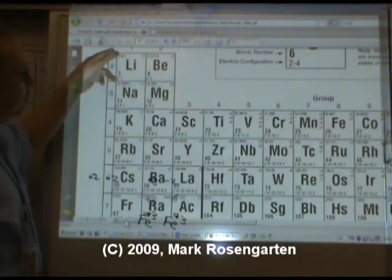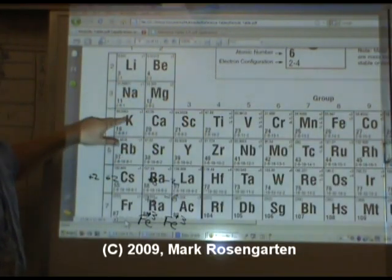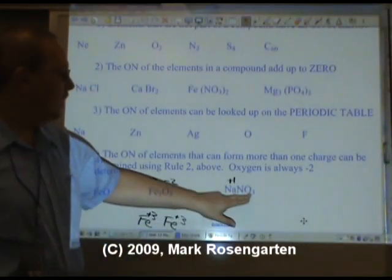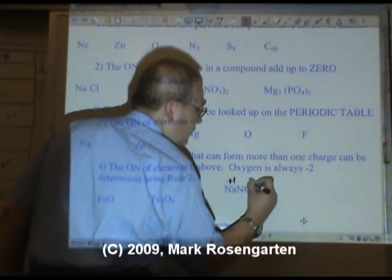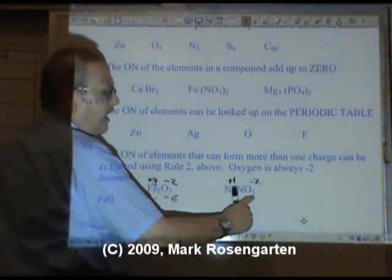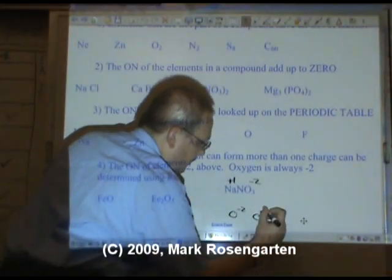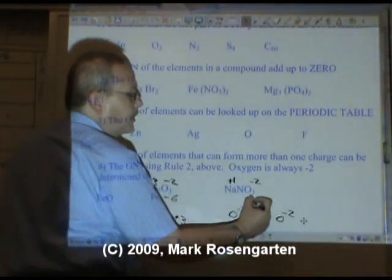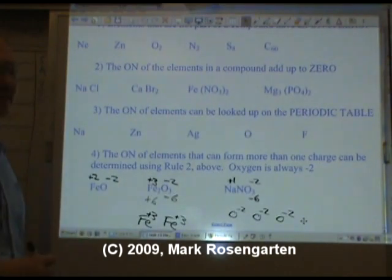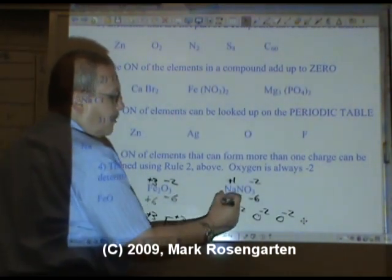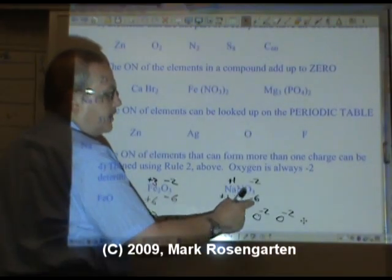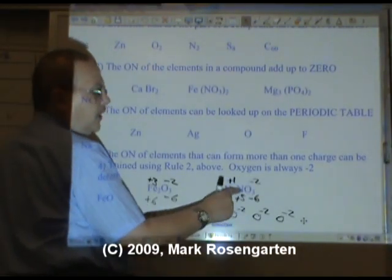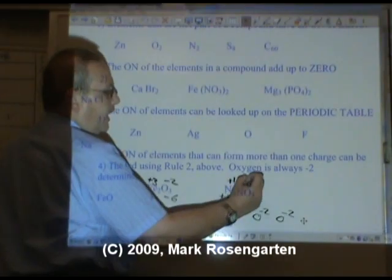Sodium, like all group one metals, has a plus one charge. Nitrogen has all these possibilities here, so we'll come back to it. Oxygen, as we've said before, can only be minus two. There are three oxygens, each of them minus two, combines for a total charge of minus six. The sodium was plus one. So what does the nitrogen have to be to make this all add up to zero? Plus five. Now there's only one nitrogen, that nitrogen is plus five.